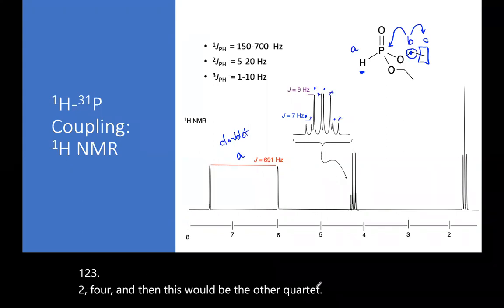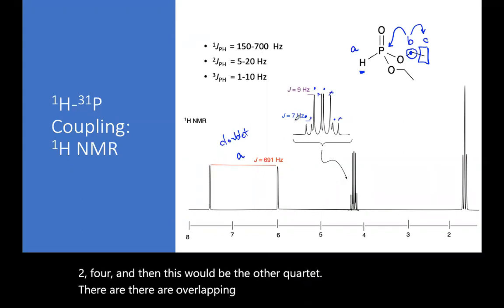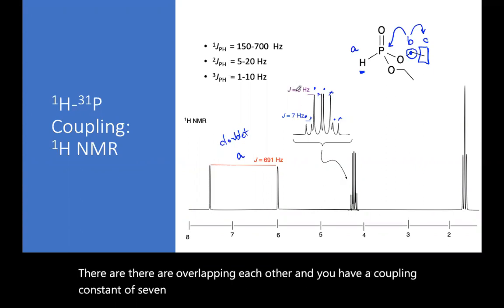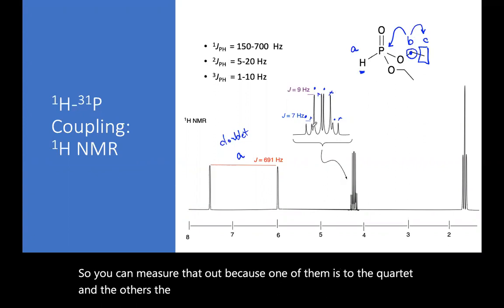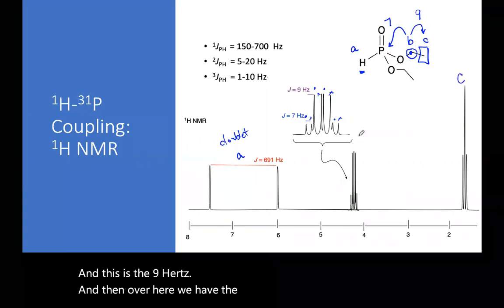They're overlapping each other. And you have a coupling constant of 7 hertz and a coupling constant of 9 hertz. So you can measure that out because one of them is to the quartet and the other is the doublet. So the doublet here is 7 hertz. That's your, this one. And this is the 9 hertz.